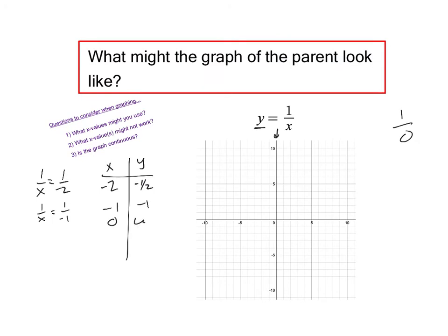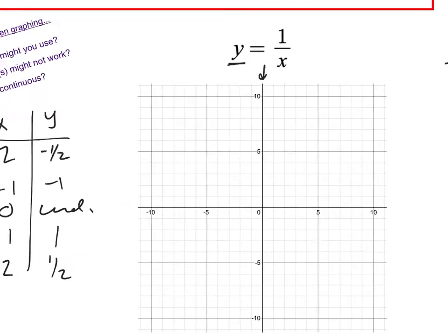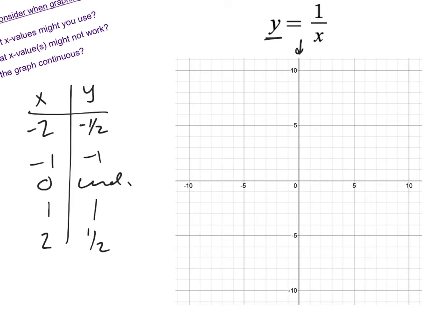0 is undefined here, so that doesn't add value for the graph. We continue on: 1 over 1 is 1, and 1 over 2 is 1 half. As we graph this, the point negative 2, negative 1 half would be about right here. The point negative 1, negative 1 would be about right here. The point 1, 1 would be here, and 2, 0.5 would be there. For x equals 0.5, 1 over 0.5 is 2 — so that's also a point. And 1 over negative 0.5 would be negative 2, so that's another point.